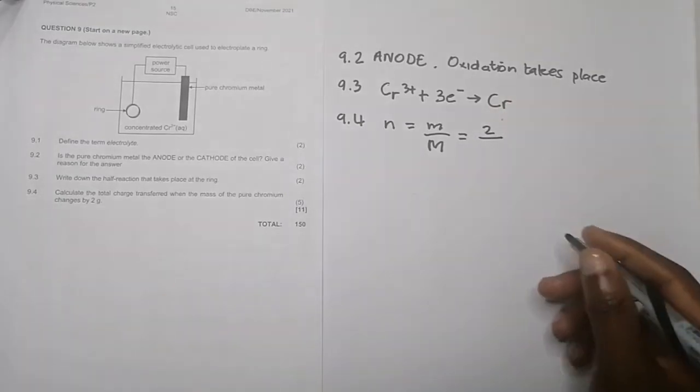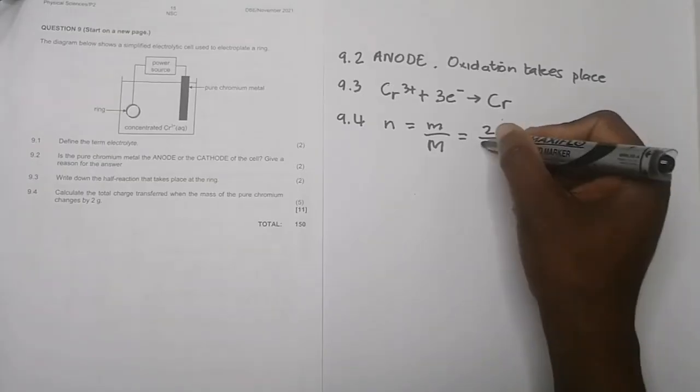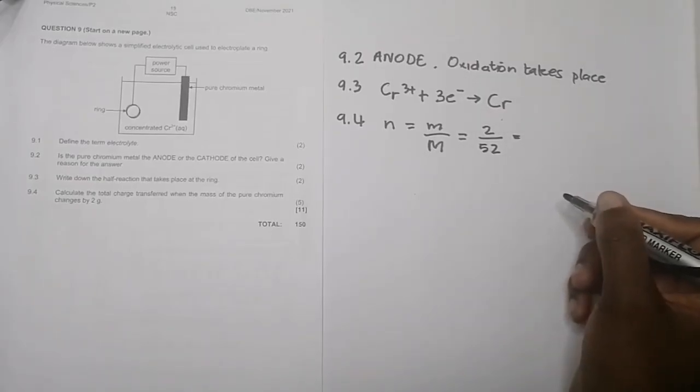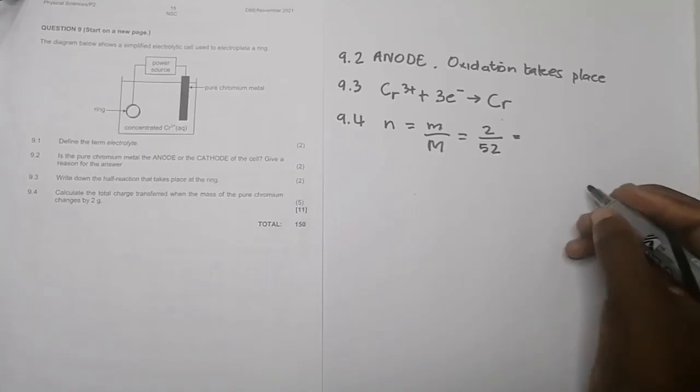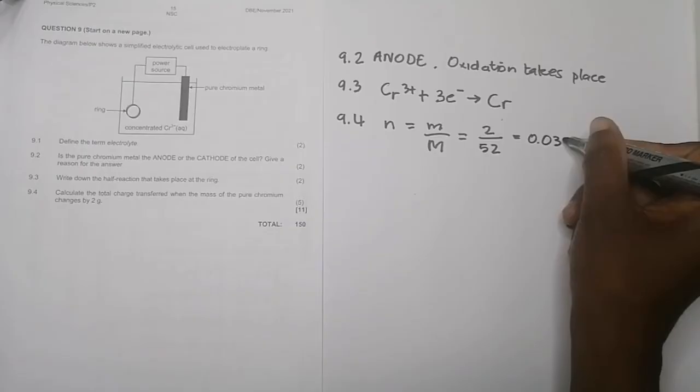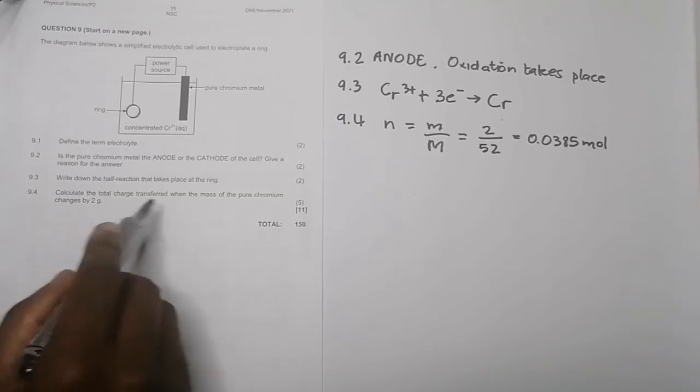Number of moles is mass divided by molar mass. The mass is 2 grams. Let's check the periodic table for chromium - I get 52. So I have 2 divided by 52, and I get 0.0385 moles.